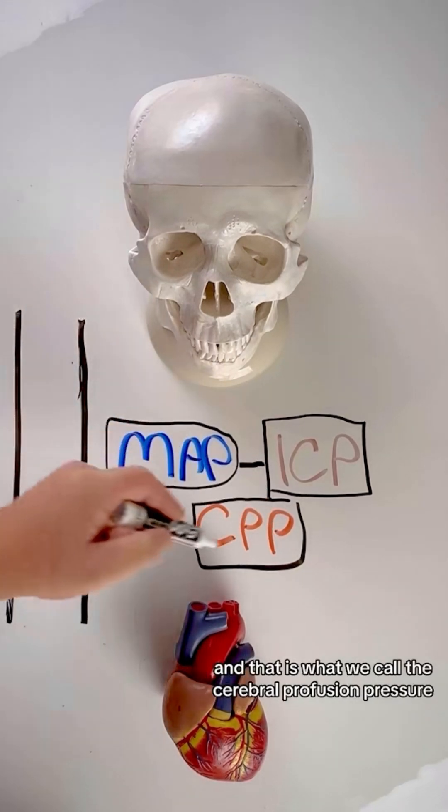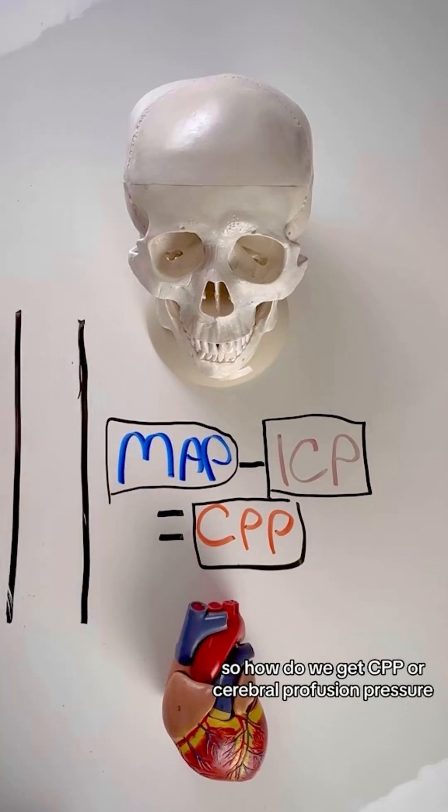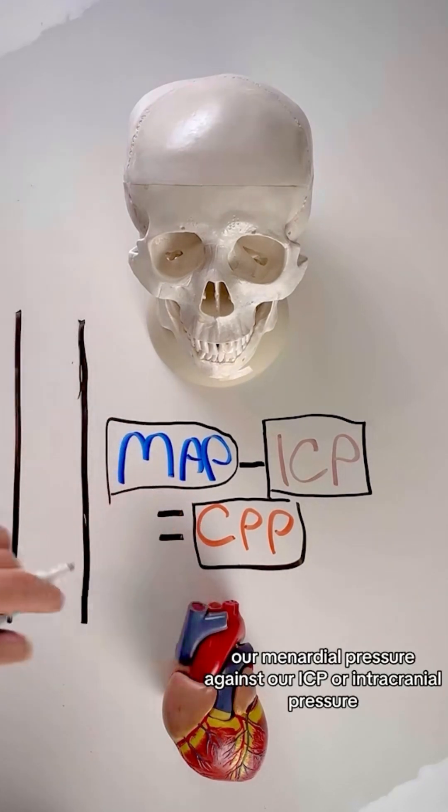And that is what we call cerebral perfusion pressure, the maintenance of that blood flow and perfusion to the brain itself. So how do we get CPP, or cerebral perfusion pressure? Well, it's based on our flow of blood to the brain, our mean arterial pressure, against our ICP, or intracranial pressure.